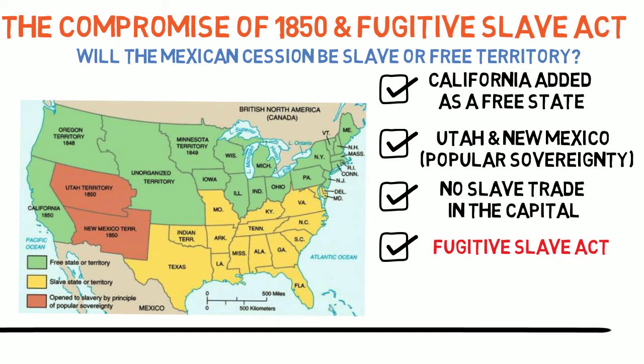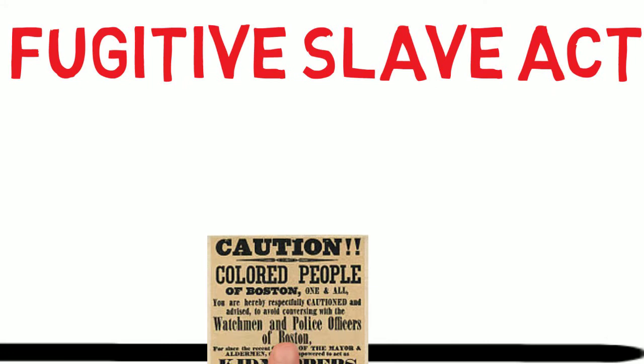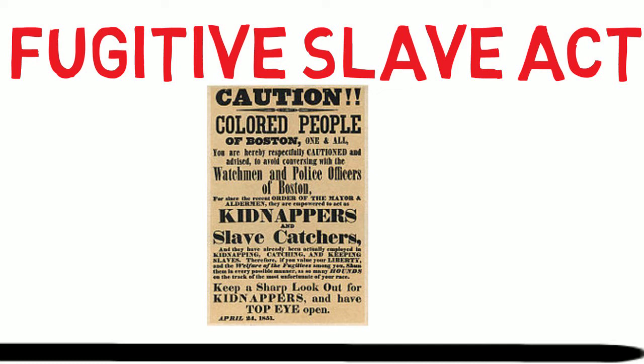The last part of the Compromise of 1850 was the most controversial: the adoption of a stronger Fugitive Slave Law, which would assist slave owners in capturing runaway slaves. The Fugitive Slave Act was very biased in favor of southern slave owners. The law required that northerners assist slave catchers and report suspected runaways. If northerners did not cooperate, they were in violation of the law. Any African American in the North, free or not, was in danger of being captured and brought before a special judge, and if captured, it was very difficult to prove their innocence. Again, this compromise, rather than resolving the issue, only inflamed the tensions even further.